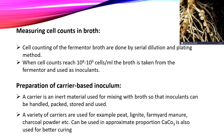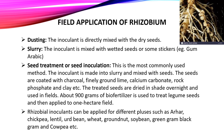For carrier-based inoculum preparation, a carrier is an inert material used for mixing with broth so that the inoculant can be handled, packed, stored, and used. A variety of carriers are used, for example peat, lignite, farmyard manure, and charcoal powder, in appropriate proportions. Calcium carbonate is also used for better curing.